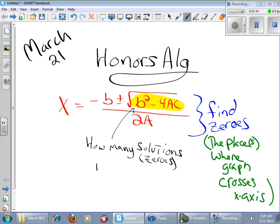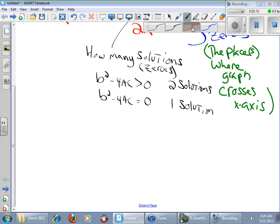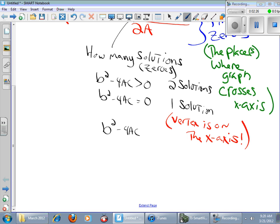When b squared minus 4ac is positive, when it's greater than zero, there's two solutions or two zeros. When b squared minus 4ac equals zero, there's one solution or one zero. And the third possibility is that b squared minus 4ac is less than zero.